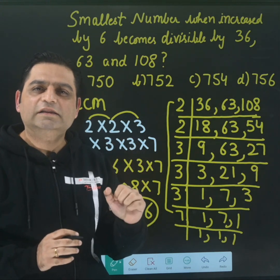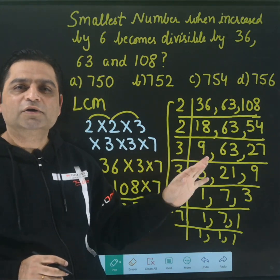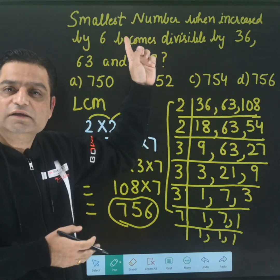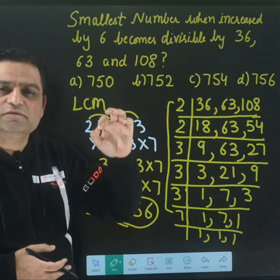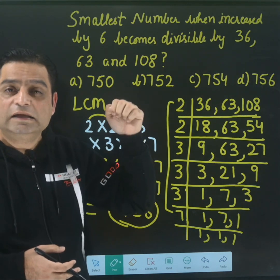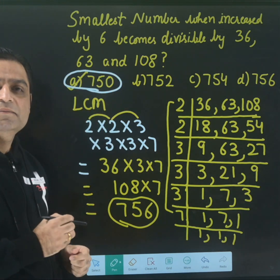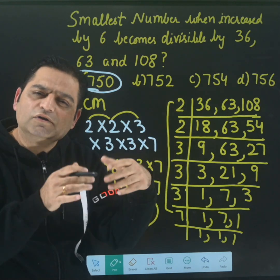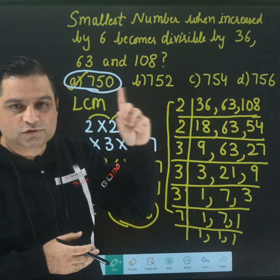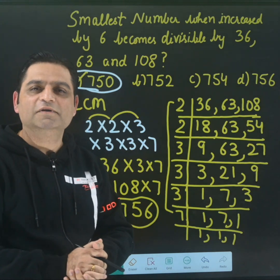Now many students make a mistake — they say 756 is the last option and mark it as the answer, but that goes wrong. Because 756 is the smallest number divisible by all three, but read the statement carefully: we need a number which when increased by 6 is divisible. So the answer is 750, because 750 + 6 = 756, which is divisible. Please don't make this mistake — D option is not the answer; the correct answer is 750. I hope you understood the concept. Thank you so much for watching.